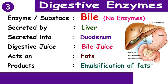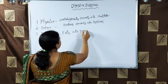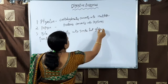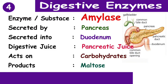The third one is bile. Bile is secreted by the liver and has no enzymes. It is secreted into the duodenum and the digestive juice is bile juice. It acts on fats and converts the fats into simple fat globules.